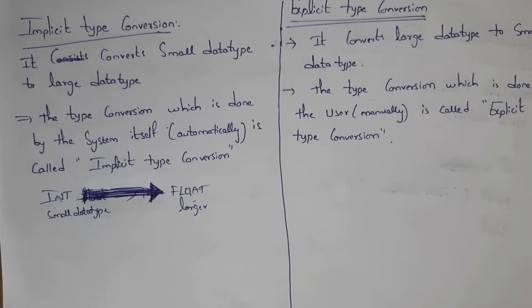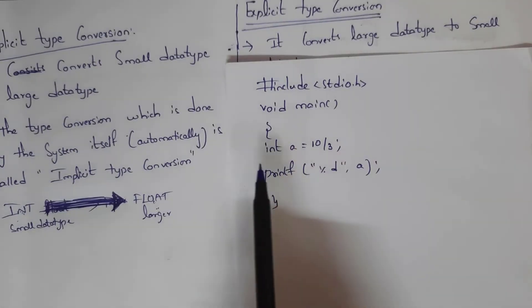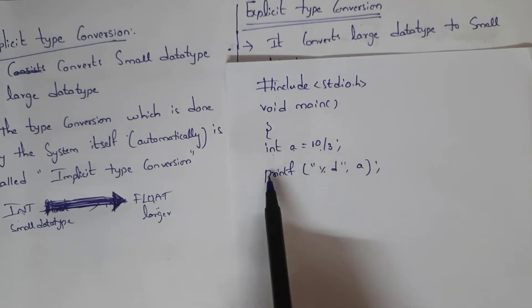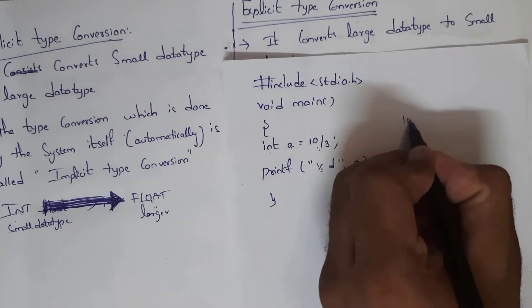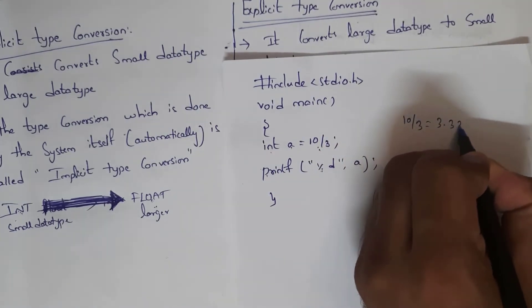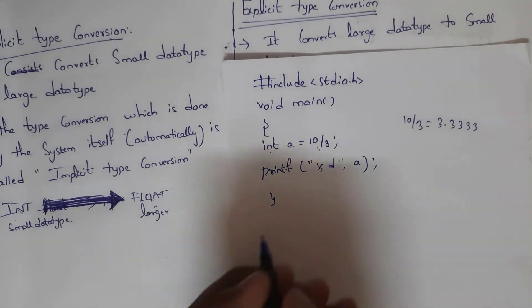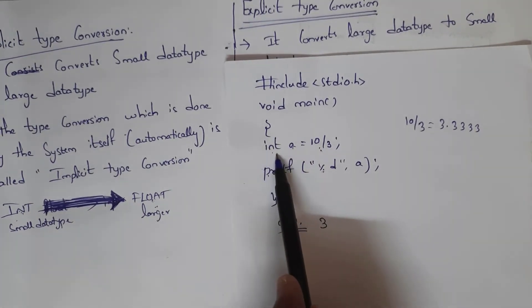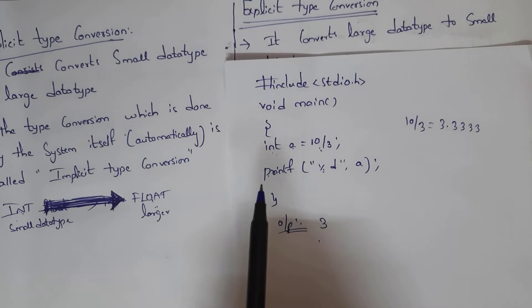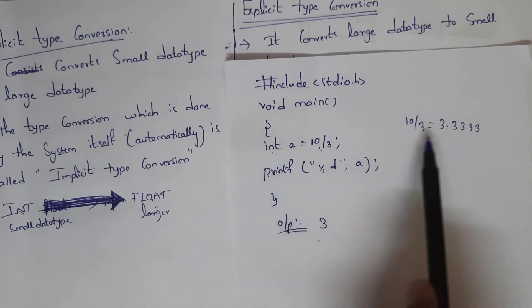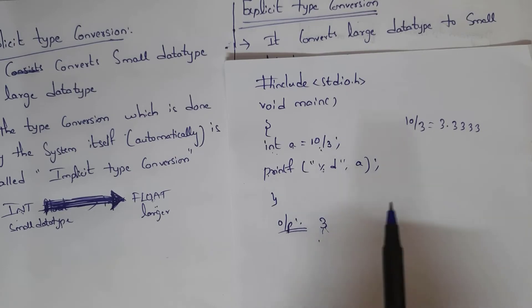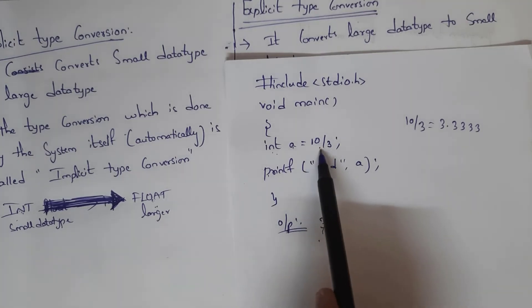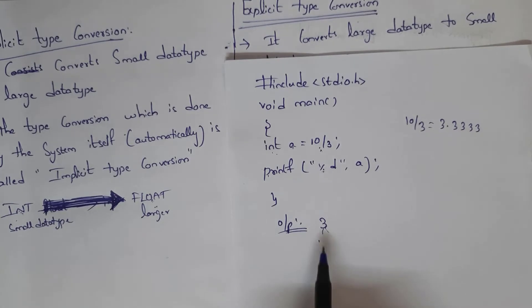For example, in this program I written: int a = 10 / 3, then printf("%d", a). If you calculate 10 / 3 in a calculator you get 3.333, but here the output is 3 because the variable is integer. The computer automatically converted the data type — this is implicit type conversion. The system automatically converted 3.333 to 3.